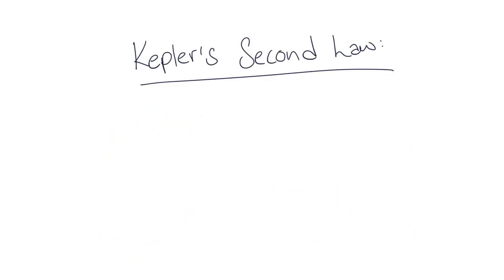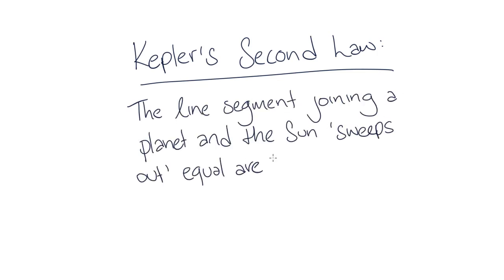Kepler's second law tells us the line segment joining a planet and the Sun sweeps out equal areas during equal intervals of time.